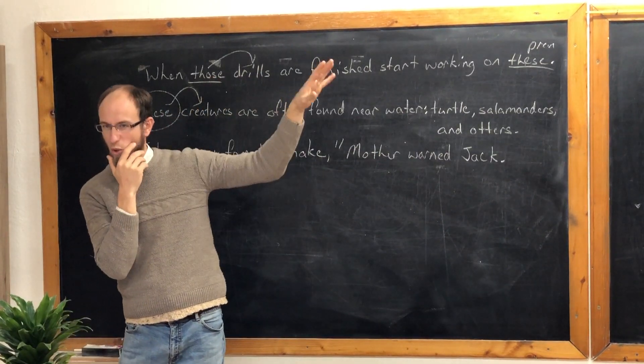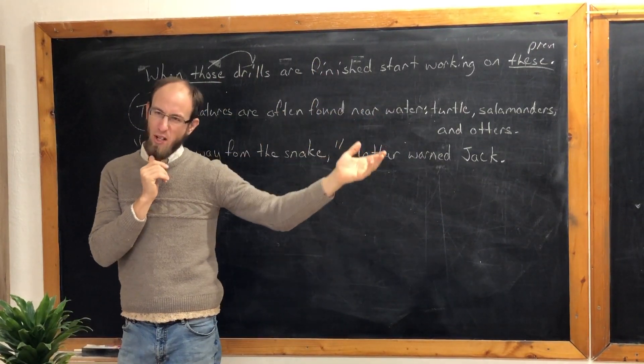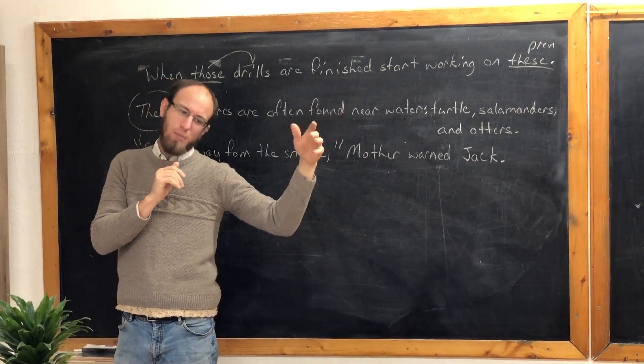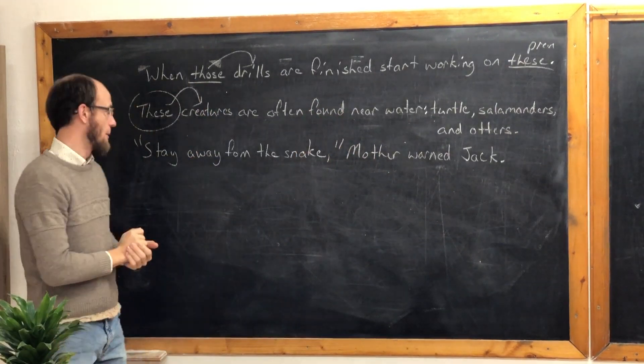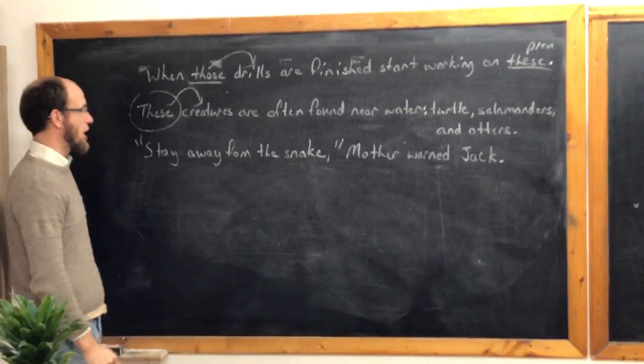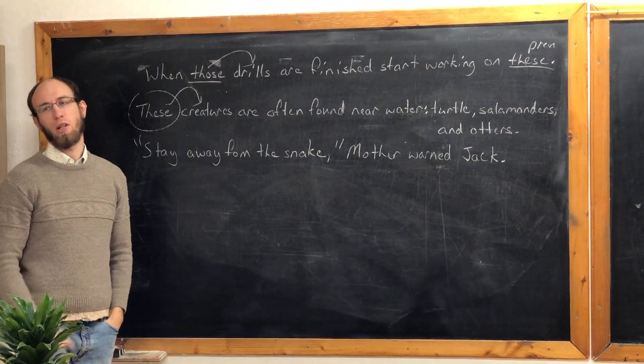But a direct quotation will have quotation marks and it's the direct exact words someone said. An indirect quotation is like you telling someone else what someone else said—kind of what they said. You're not saying they didn't say this exactly, but you know, something to the effect of: Stay away from the snake, mother warned Jack.